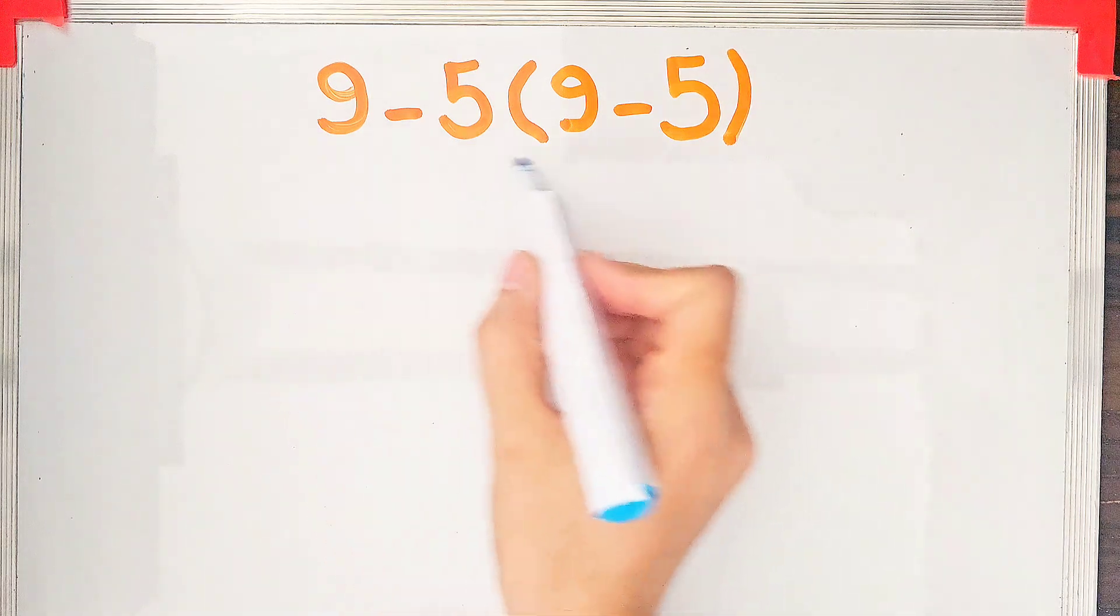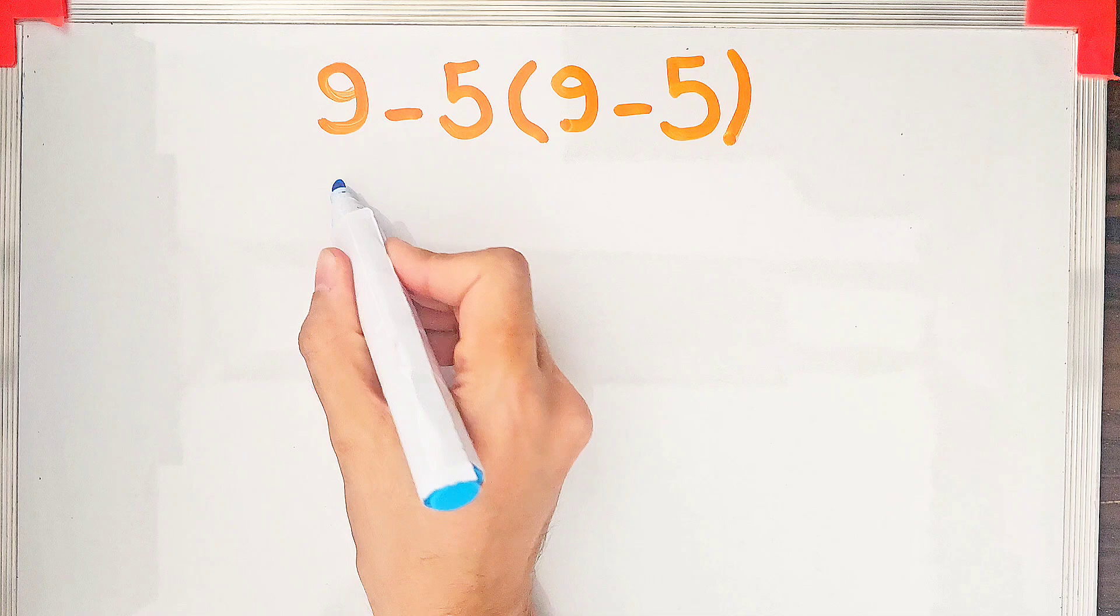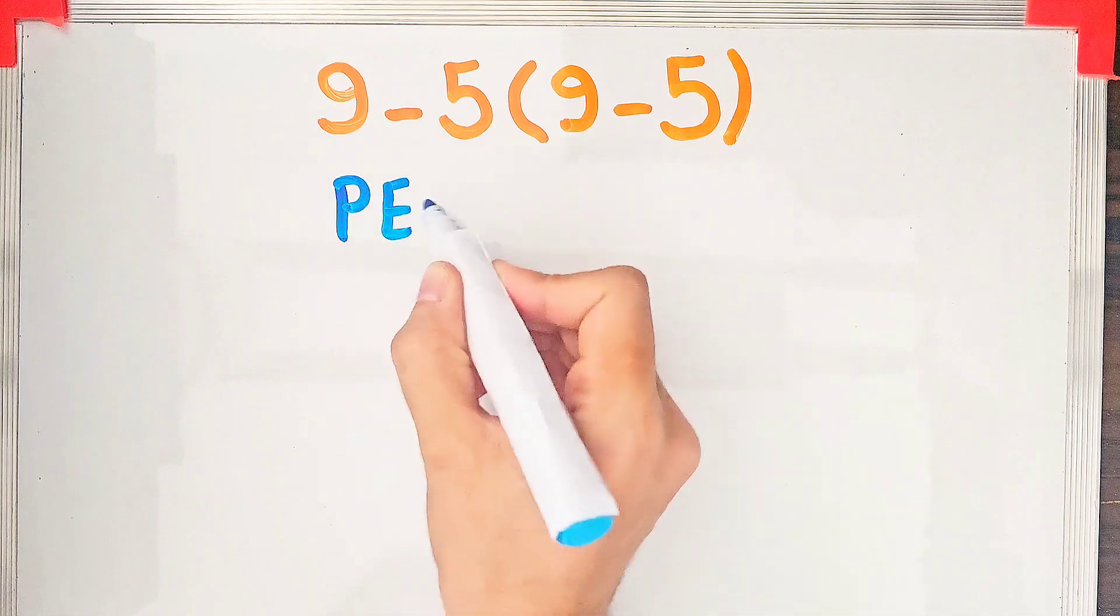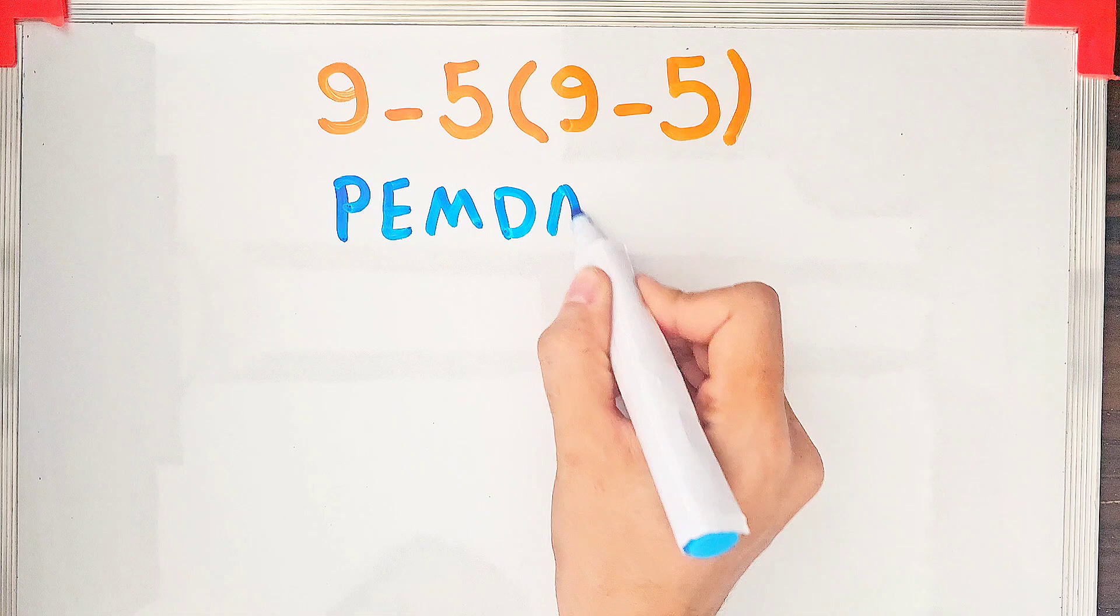Nine minus five times nine minus five. Can you solve this question? To solve this question, we need to follow a rule that's called PEMDAS. PEMDAS shows the priority of the mathematical operations.